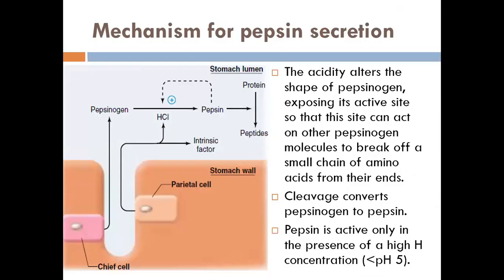Regarding the mechanism for pepsin release: certain factors stimulate the chief cells to release pepsin. Pepsin is released in the form of pepsinogen, which is a precursor for pepsin. For pepsin to be activated, you need hydrochloric acid to expose the catalytic site of pepsinogen. The hydrochloric acid activates pepsinogen into pepsin, and then pepsin can auto-activate — it can go and activate other pepsinogen molecules into pepsin.